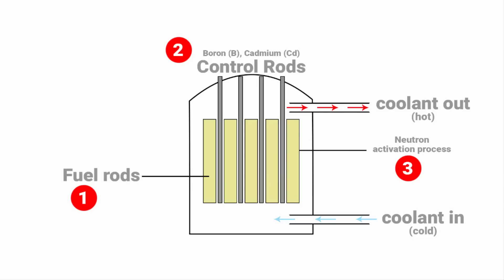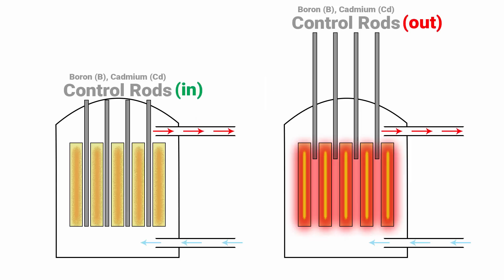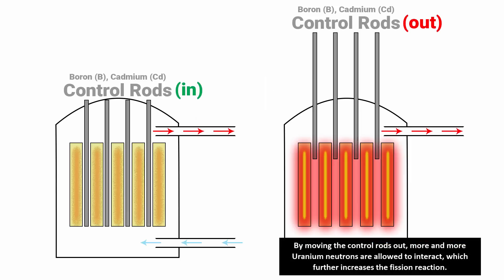And now it's time for neutron activation. The operator of a nuclear reactor initiates and controls the neutron activation process by adjusting the position of the control rods within the reactor core. By moving the control rods out, more and more uranium neutrons are allowed to interact, which further increases the fission reaction. This process is carefully managed by the operators and they need to moderate the neutron flux within the reactor's core to achieve and maintain the desired power level of the reactor.